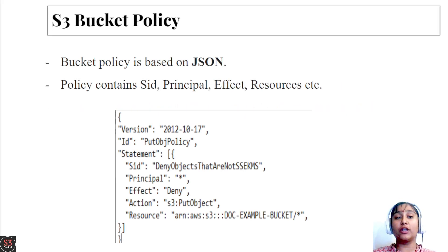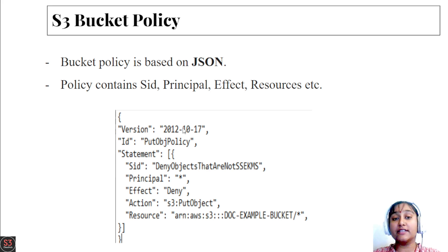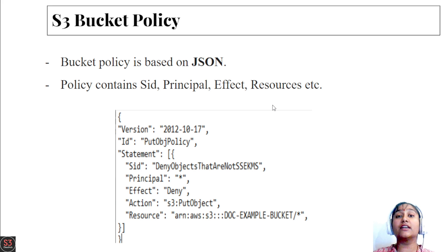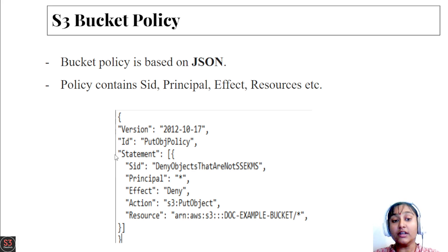Now let's talk about bucket policies. Bucket policies are based on JSON, so to create a bucket policy we need to create a JSON script and add it. The policy contains important parameters such as ID, principal, effect, resources, etc. Let's take an example and learn each parameter in detail. First we have version, we have ID, and the most important block is the statement block.